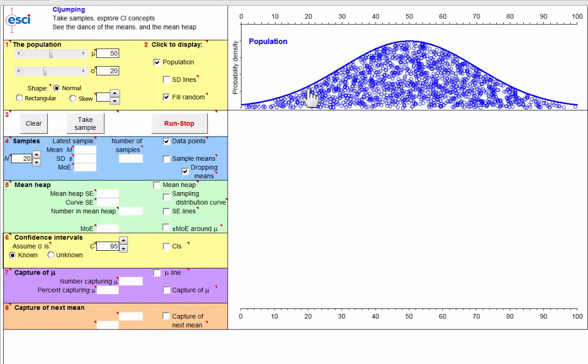I'm at the CI jumping page in ESCI, and here is our population filled in, suggesting an infinite number of potential data points. I'm going to take some samples of size 15, so I set N as 15 over here, and take a sample.